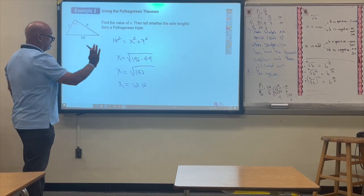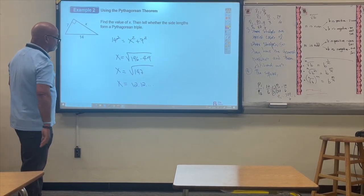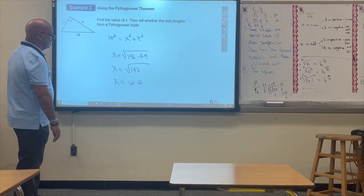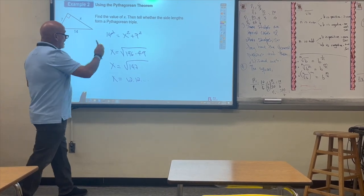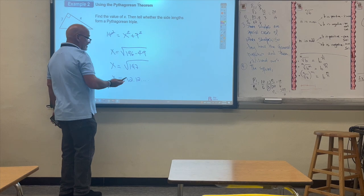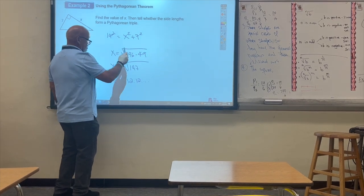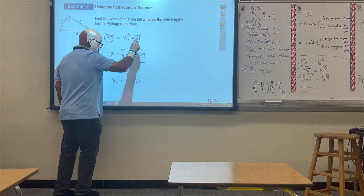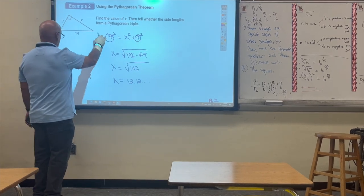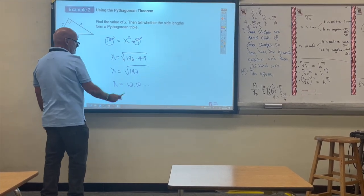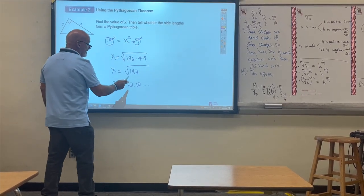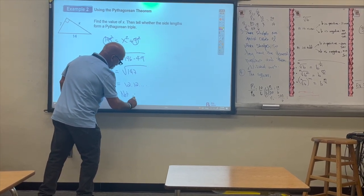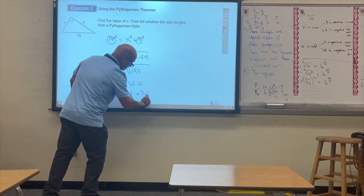The problem doesn't say anything about rounding, so we leave it rounded to the nearest hundredth. Do we have a Pythagorean triple? No — because even though the hypotenuse and one leg are integers, the third leg is a decimal, 12.4. So this is not a Pythagorean triple.